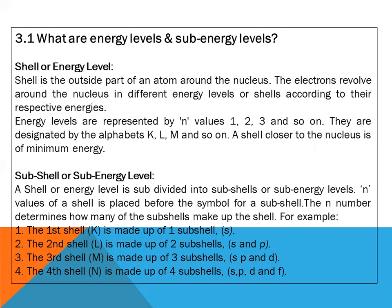Sub-shell or sub-energy level: A shell or energy level is subdivided into sub-shells or sub-energy levels. The n value of a shell is placed before the symbol for a sub-shell. The nth number determines how many of the sub-shells make up the shell. For example, the first shell (K) is made up of one sub-shell: 1s.